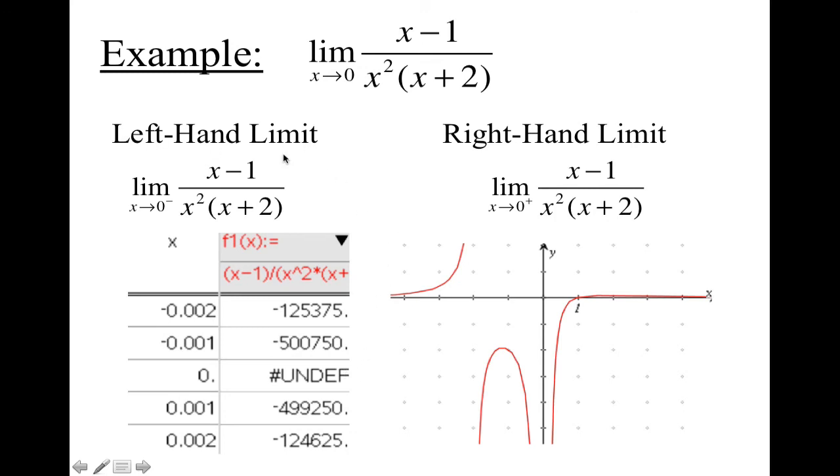So if we were to look at the graph for the left handed, as we're approaching x equals 0 from the left, you should see that the function is getting increasingly larger towards the negatives. And from the right hand side, as we're approaching 0, you should see that the graph is getting also increasingly large in the negative side.